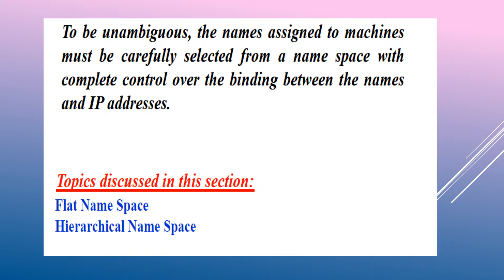To be unambiguous, names assigned to machines must be carefully selected from a namespace with complete control over the binding between names and IP addresses. This mapping plays a very important role. There are two ways to define a namespace: flat namespace and hierarchical namespace. In flat namespace, as the name indicates, the name is a sequence of characters without specific structure. The main disadvantage is that it cannot be used in a large system such as the internet because it must be carefully and centrally controlled to avoid ambiguity or duplication.